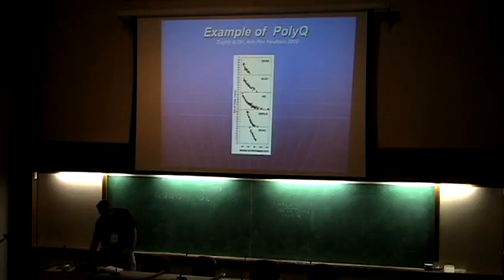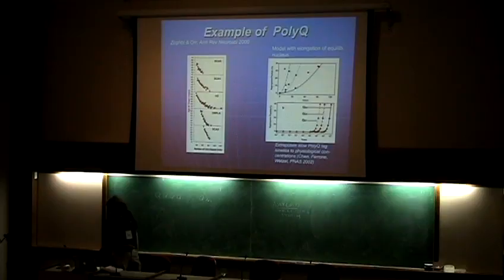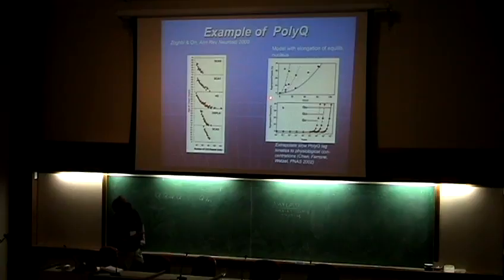I'm going to show you a plot of an in vitro experiment done by Chen, Theron, and Wetzel. What they did was make up sets of poly-Q and throw it in a test tube — they didn't take the full Huntington protein, which is a huge protein, but just the glutamine repeat part. They varied the concentrations and the lengths: length 45, length 37, and length 25. These are pretty high concentrations, and they began to see aggregation of the peptide on the timescale of hours in an amyloid form.